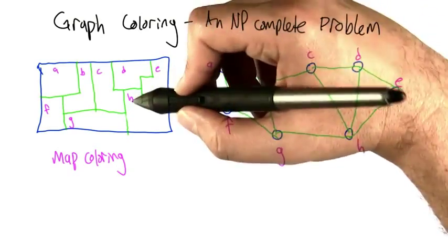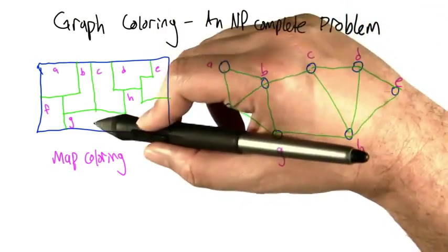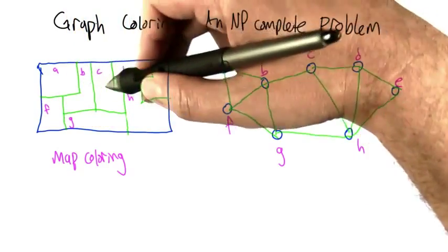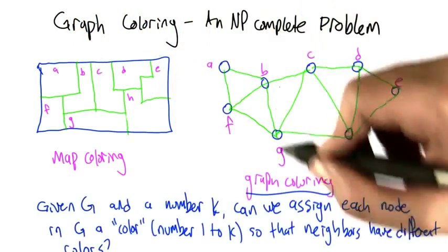Did I get everything? H doesn't connect to B. G doesn't connect to C. Yes, it does. G has borders with F, B, C, and H. Given that transformation,